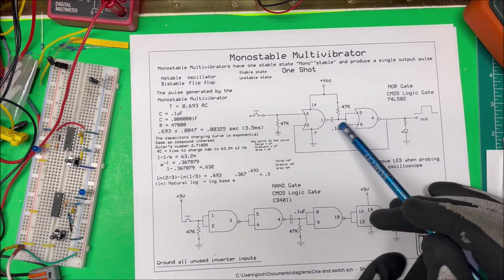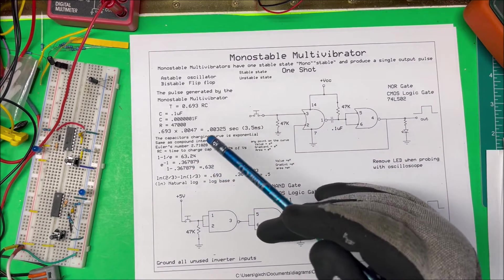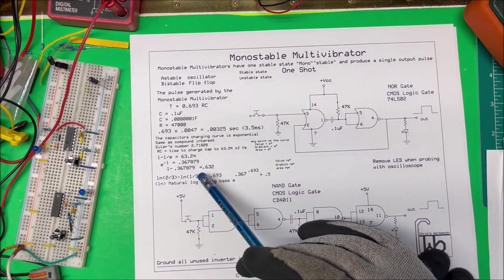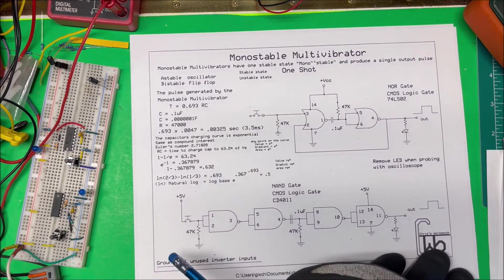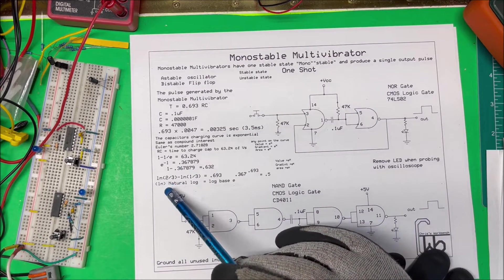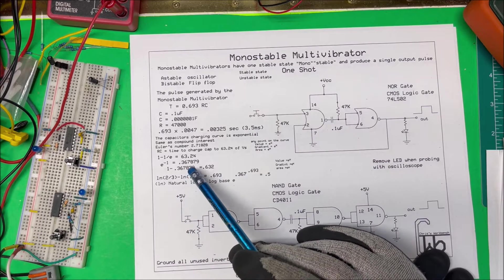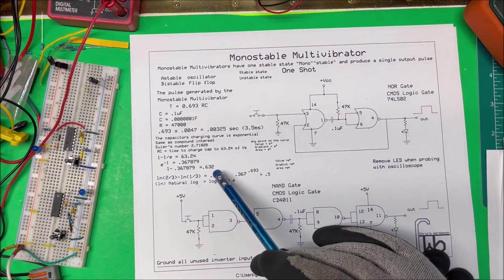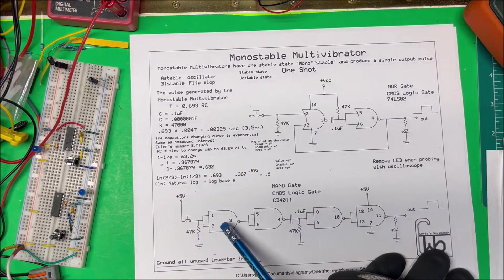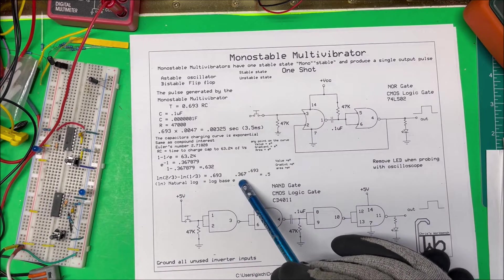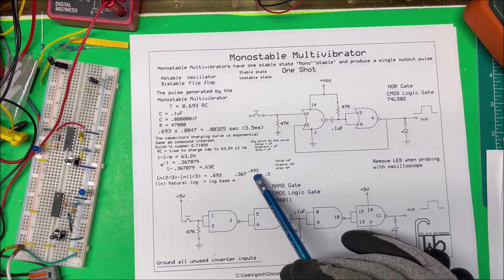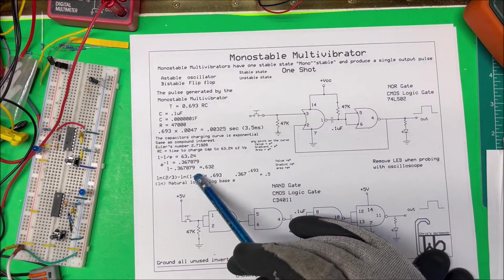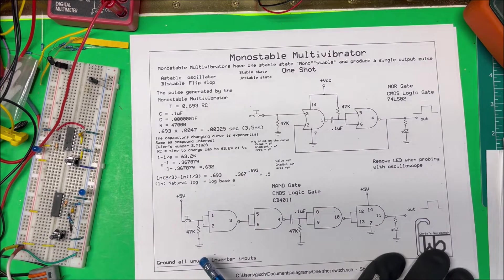Now this doesn't work on the 63 percent, but it does work at two-thirds from stable state to unstable state, between two-thirds and one-third of the supply voltage. If we take the natural log of two-thirds minus the natural log of one-third (the natural log is log to the base e), that gives us 0.693. If we take the reciprocal of e to the power of 0.693, that gives us 0.5, and the difference between two-thirds and one-third is 0.5.